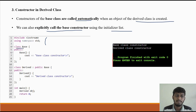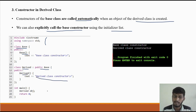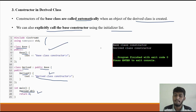Here is a simple code for single inheritance. We have the base class with its constructor, and the derived class which inherits from the base class with its own constructor. In the main function, when the derived class object is created, both the base class and derived class constructors are called, and the output is printed on screen.